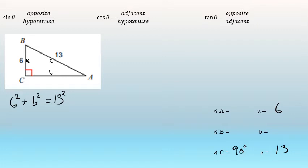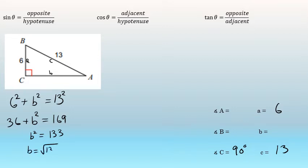One of the legs is exactly 6, and 6 squared is 36. The other leg B is unknown, and the hypotenuse is 13, which when squared is 169. To solve for B, we'll first subtract 36 from both sides of the equation to find that B squared is equal to 133, which means B is the square root of 133. That's the exact length of side B. The square root of 133 is an irrational number. If you would like to round that off to the nearest tenth, you could state that as 11.5, but realize that's approximate. The actual length of side B is the square root of 133.